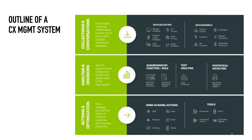The second capability is that a CX Management System enables an organization to identify opportunities, understand trends, and deliver data to the right people. Once you've collected feedback, the real value comes by providing visibility to those metrics and insights on role-specific dashboards — giving regular programmatic visibility to metrics versus target and how the organization is trending. Text analysis and statistical analysis solutions allow leaders to capture richer insights into what's really driving those metrics, what customers are thinking and feeling.